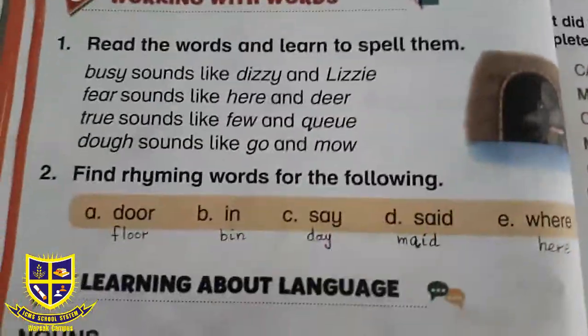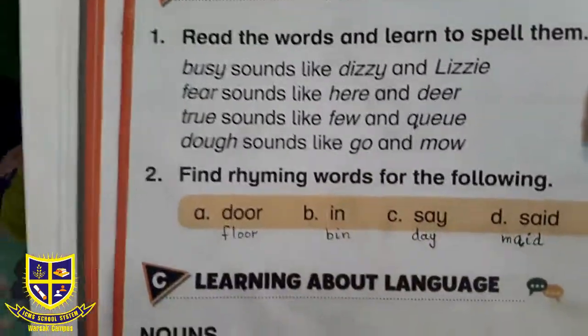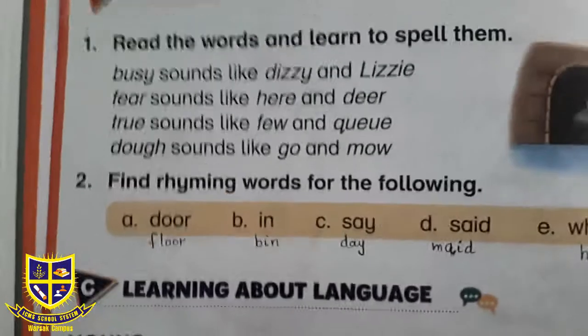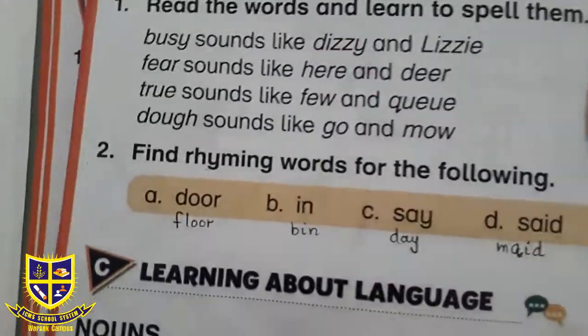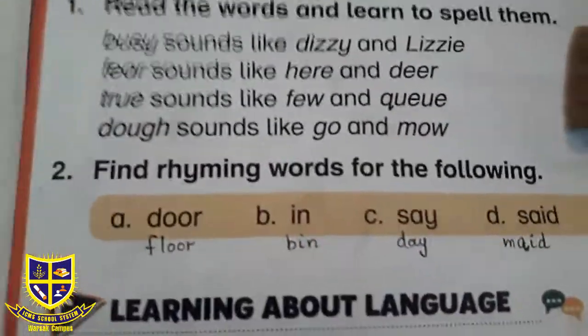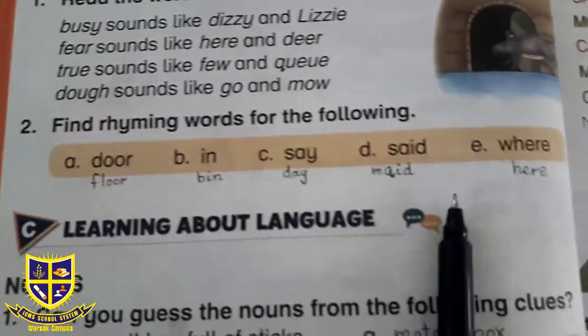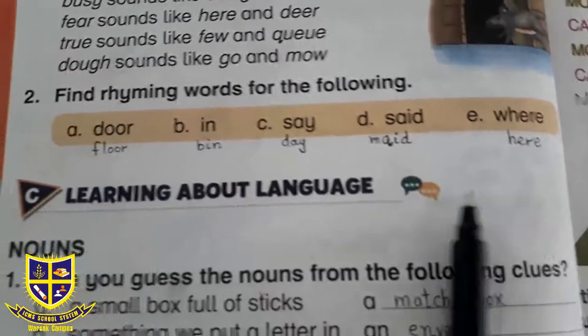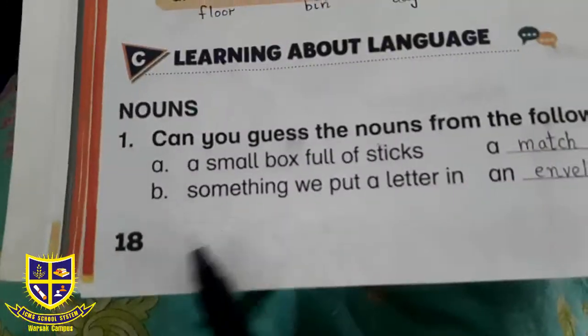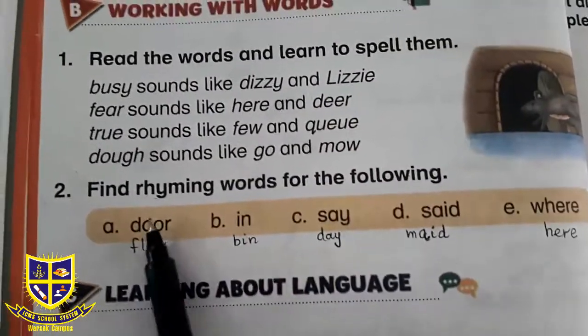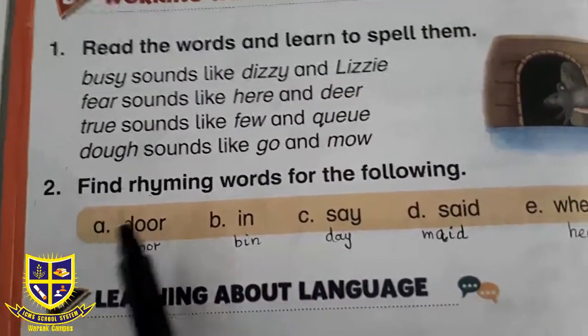Dear students, the question answers will be sent to you in copy form in the next video, along with dictation words, rhyming words, and question answers of the poem. Now we will move to the book exercise on page number 18. Here we have: 'Find rhyming words of the following.'